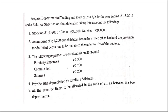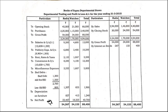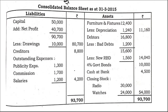Interest on government bonds is income, so it is written on the credit side of the profit and loss account. Total both sides; the balancing figure is the net profit, which is then transferred to the balance sheet.